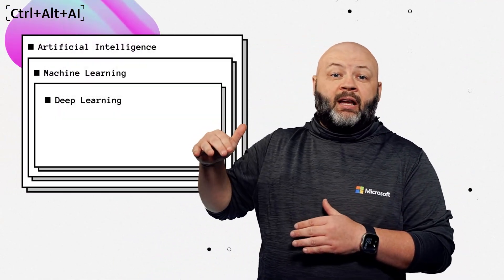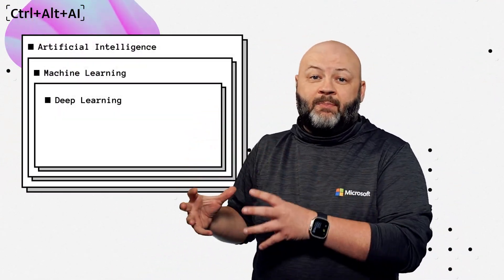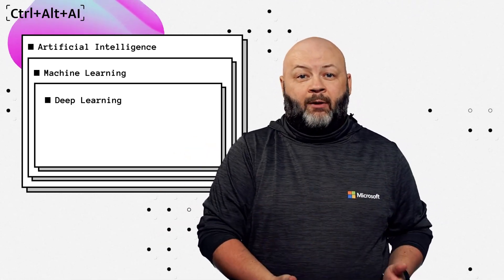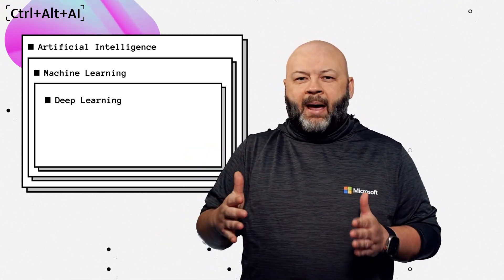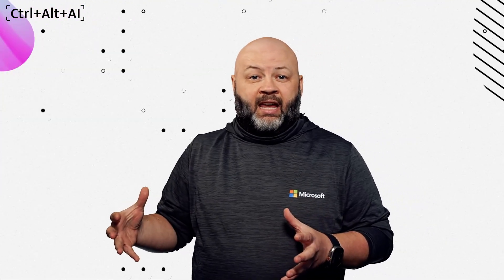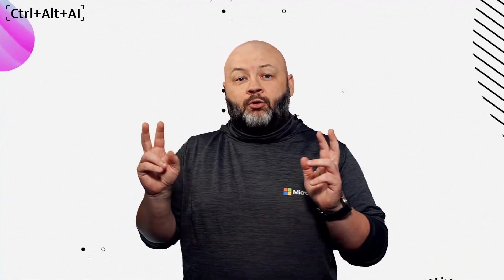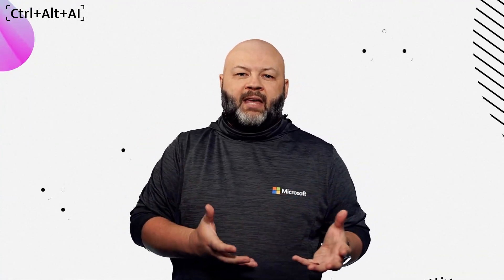If we dig even deeper into machine learning, we get to deep learning. And we can't really talk about deep learning without discussing neural networks. If we think about our brain, it's made up of neural pathways and nodes that are firing to help us reason, infer, and learn. In the same way, we're building neural networks that mimic that behavior to help the machine reason, learn, and infer.